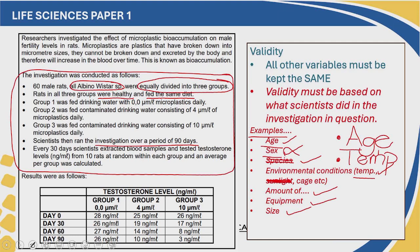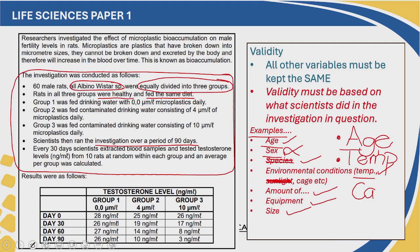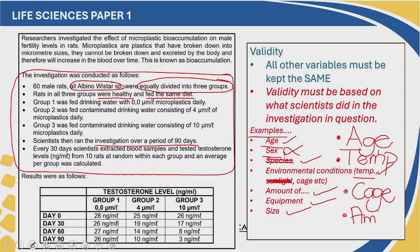Cage size might affect the movement of the rats and how they can interact in the cage, so cage size could affect male fertility. That is another factor that we would keep constant in this investigation. Then, what were the rats given? They were given water with microplastics in them. Was the amount of water controlled? In this case it wasn't — they controlled the amount of microplastics in the water, but they didn't control the amount of water. So another way to improve validity would be to control the amount of water given to the rats.